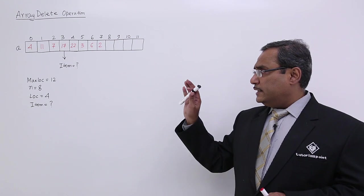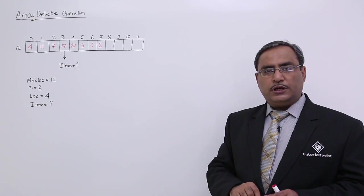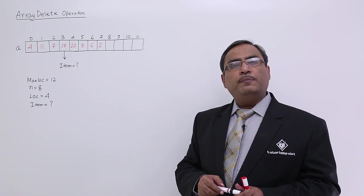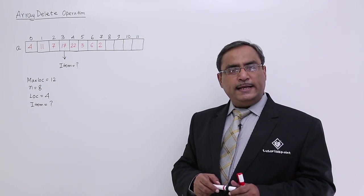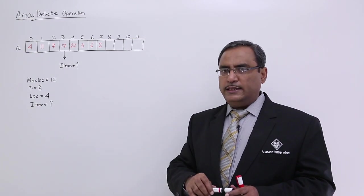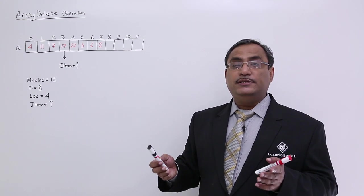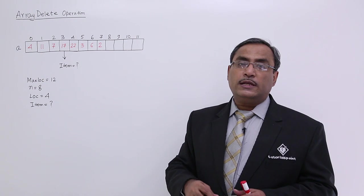So here at first, in case of deletion operation, I shall have to check whether value of n is equal to 0 or not. If value of n is equal to 0, that indicates there is no data in the array. So how can the deletion operation take place? So the situation thus produced will be known as underflow.